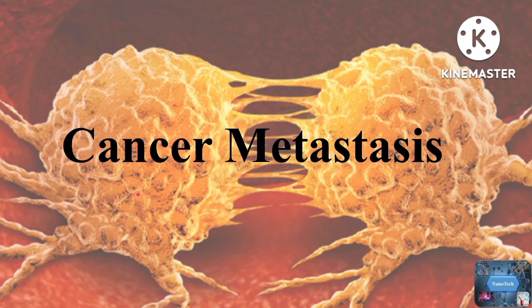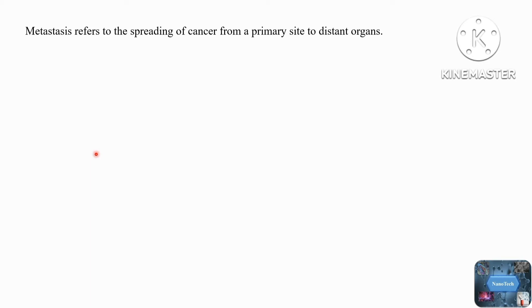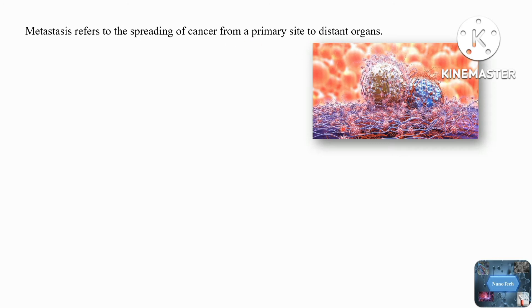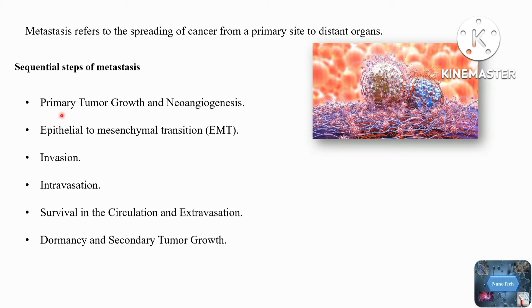Welcome back to another video tutorial. In this tutorial I will talk about metastasis in detail. Basically, metastasis refers to the spreading of cancer from a primary site to distant organs. Metastasis involves different sequential steps: primary tumor growth, neoangiogenesis, epithelial to mesenchymal transition, invasion, intravasation, survival in the circulation, extravasation, dormancy, and secondary tumor growth. Let's look at each of these steps in more detail.